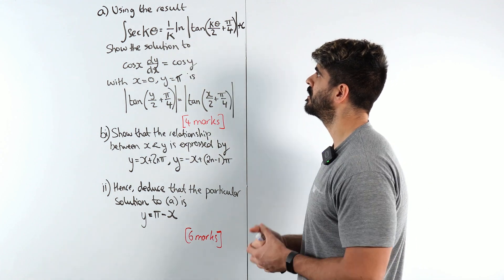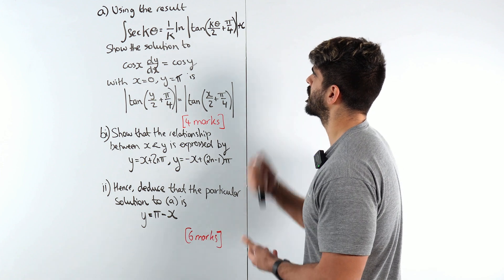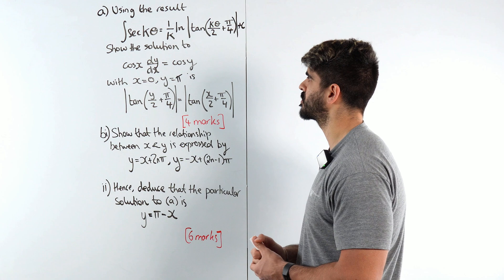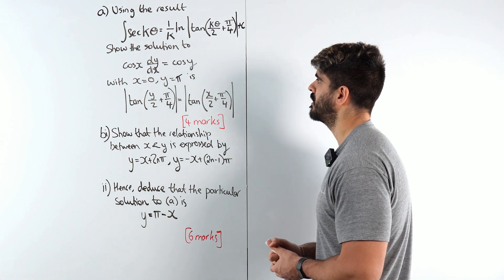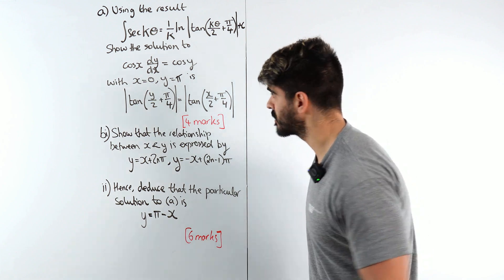Using the result the integral of sec k theta is 1 over k ln tan of all of that, show the solution to cos x dy dx equals cosy with x being 0, y equals pi is this. That's a cheeky four marks.